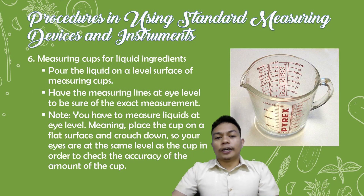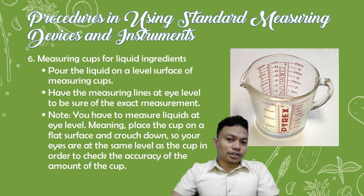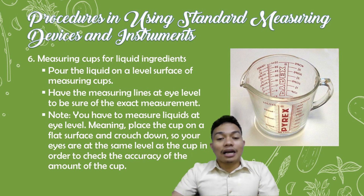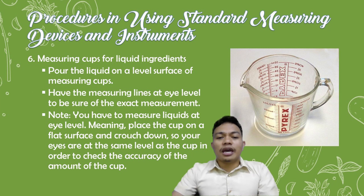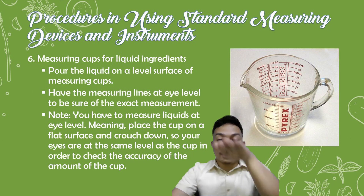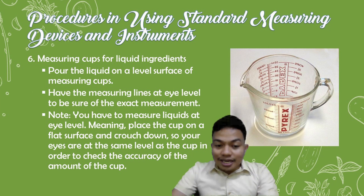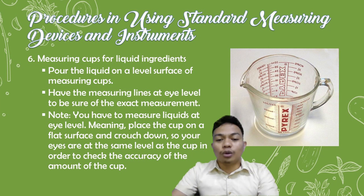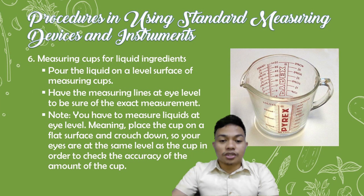If using cups for liquid ingredients, it is similar to using a beaker or graduated cylinder. Pour the liquid into the measuring cup, then have the measuring lines at eye level to ensure exact measurement. Place the cup on a flat surface and crouch down so your eyes are at the same level as the cup in order to check the accuracy of the amount.